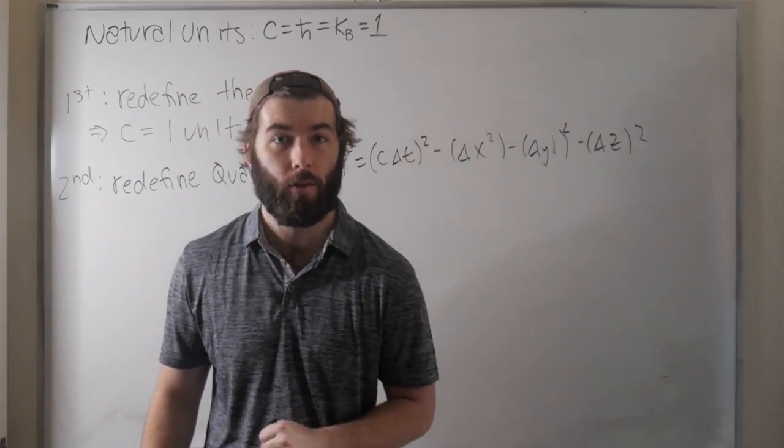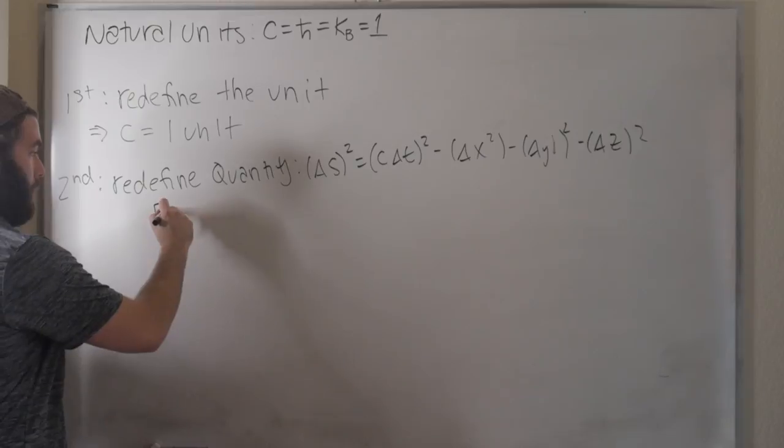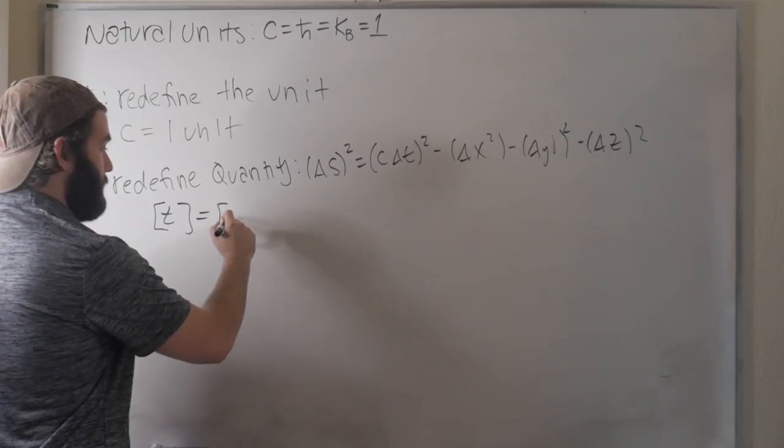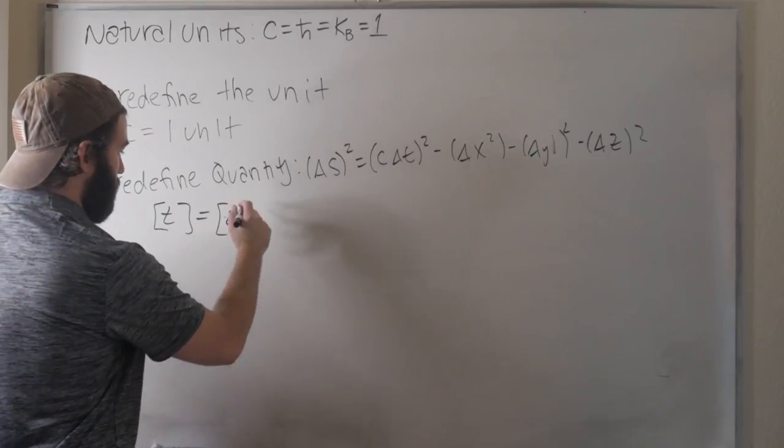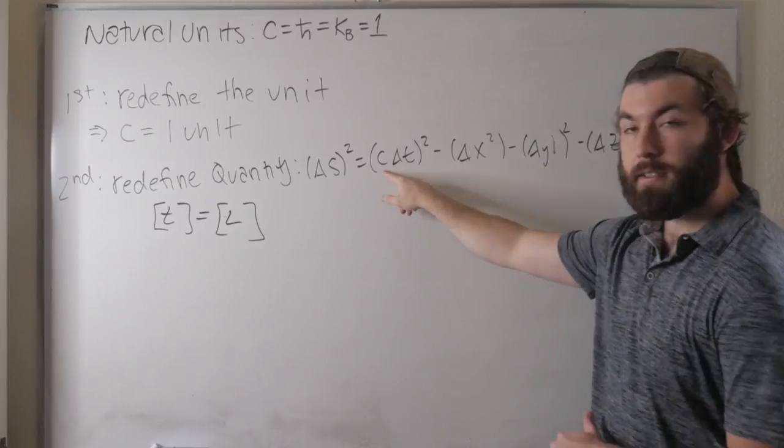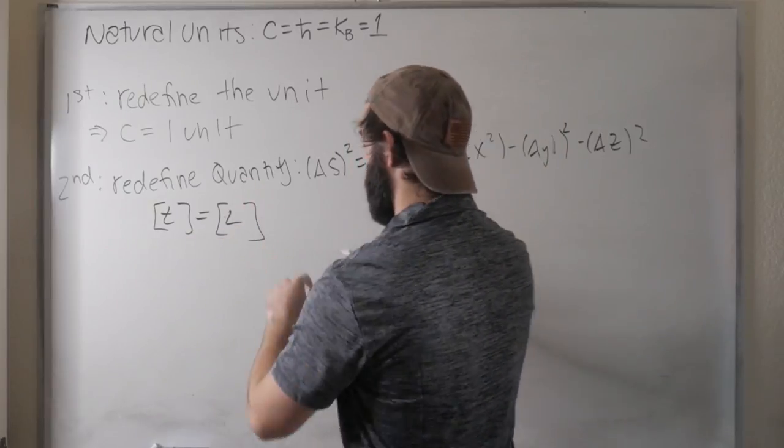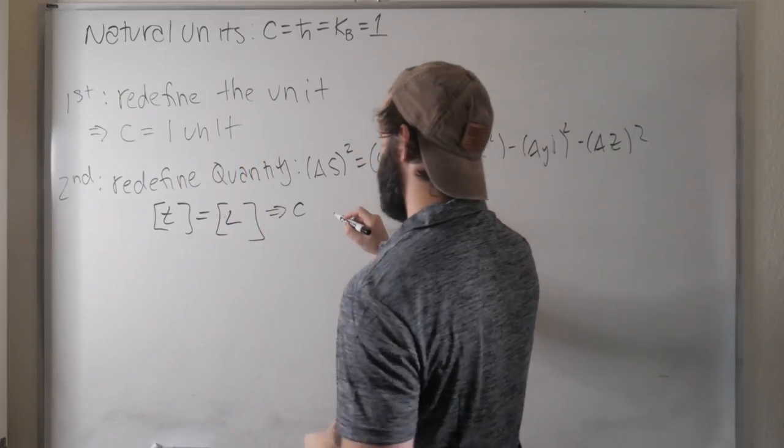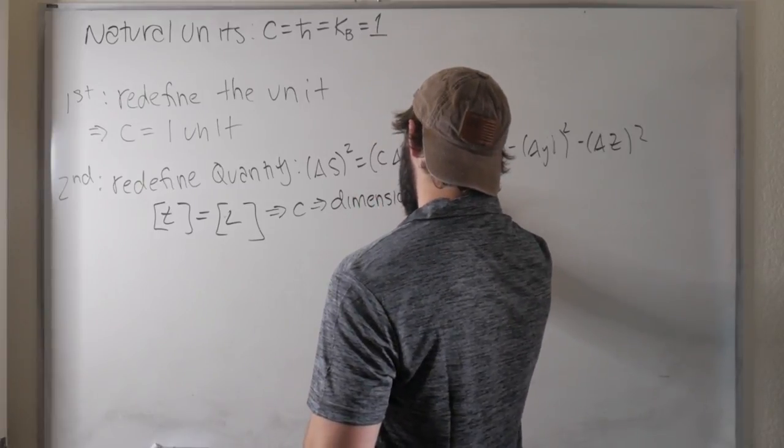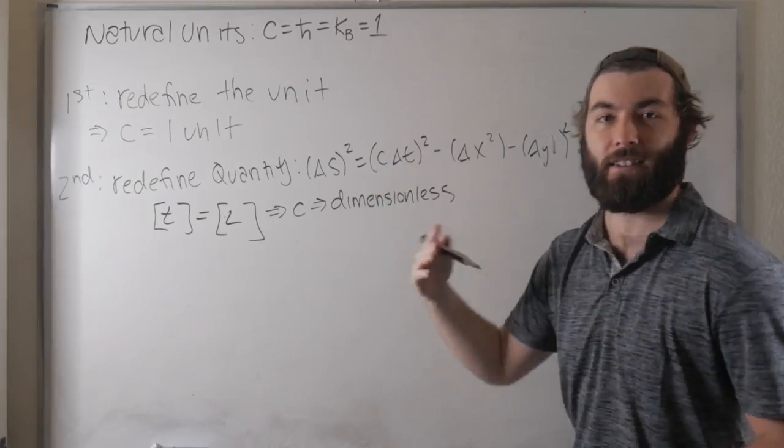So I could say, I want to impose, and I'm going to use this notation throughout the video, impose that time has the same units, that's what the square bracket means, the units of time has the same units as distance, I'll call that L. Then if we look at this equation, if time and space have the same units, then the constant that multiplies time has to be a dimensionless quantity. So imposing these things, redefining our quantities, will make c or another constant, if we follow it for maybe h-bar or something, becomes dimensionless. Because if it wasn't dimensionless, then we would be subtracting things that had different units, and that wouldn't make any sense.